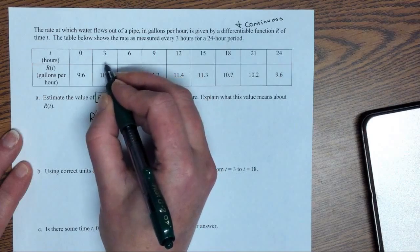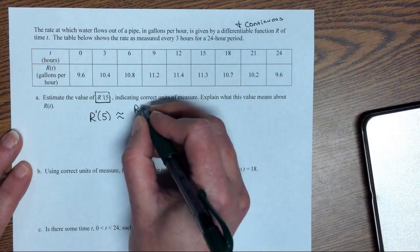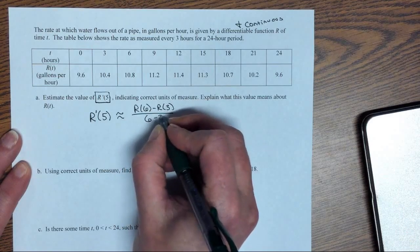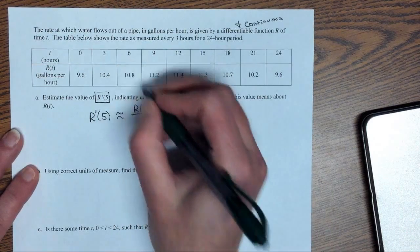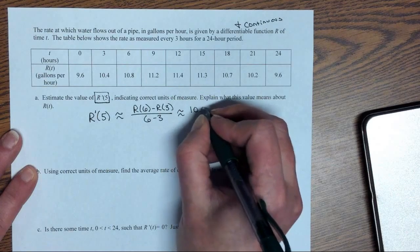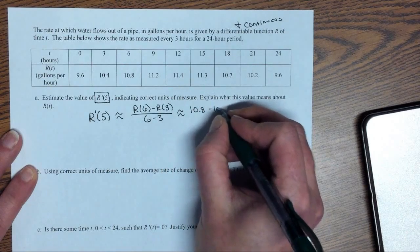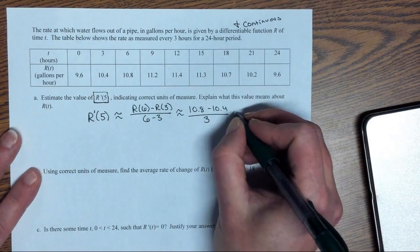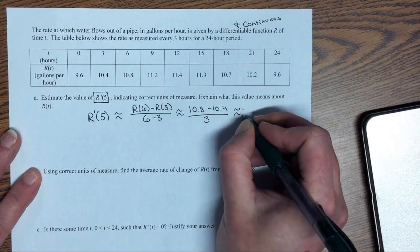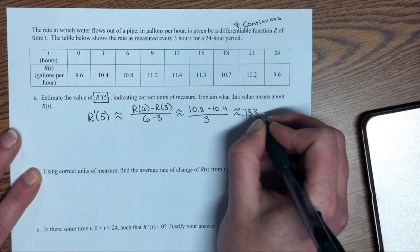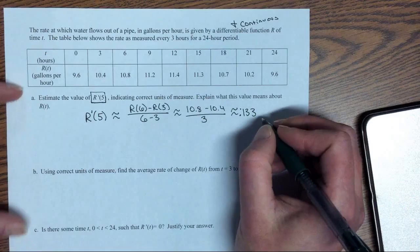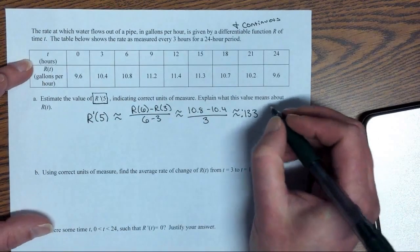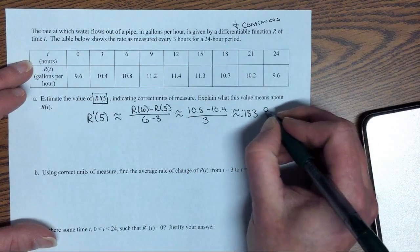So that would be the rate of change around 5 and we're estimating this. So around 5 would be to take 6 and 3. So r(6) minus r(3) over 6 minus 3. So r(6) was 10.8, r(3) is 10.4 and the difference in our hours is 3. This gives me approximately 0.133 and we'll think what our units would be. So r(6) is gallons per hour divided by hours, so that is going to be gallons per hour squared.